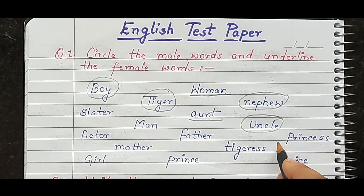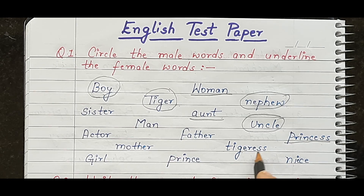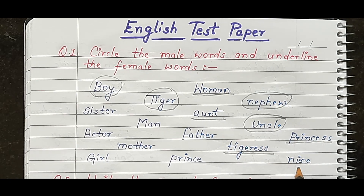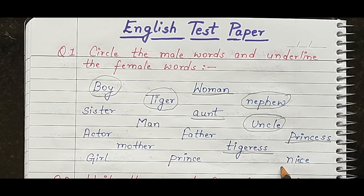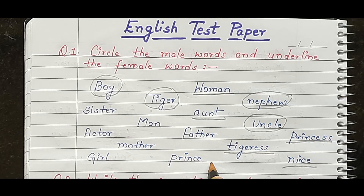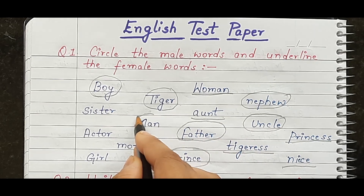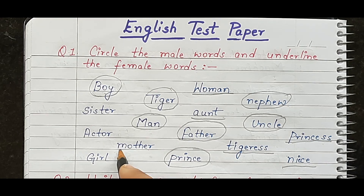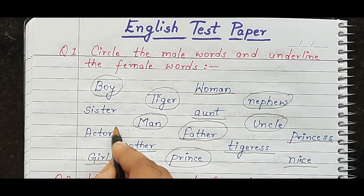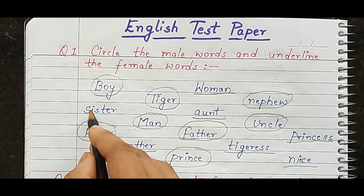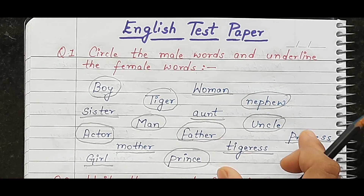'Princess' — princess is a female gender. Moving through more examples: 'knee' is female, 'prince' is a male word, 'father' is a male word, 'girl' is a female word, 'actor' is a male gender, and 'sister' is a female gender. You can practice identifying male and female words this way.